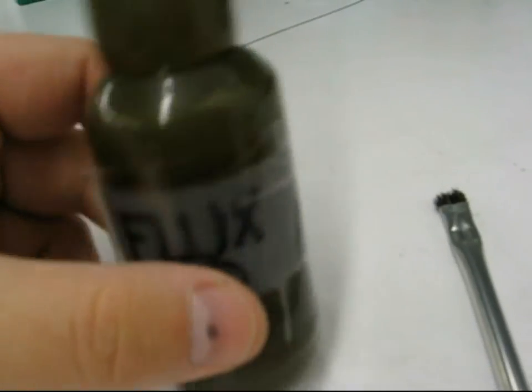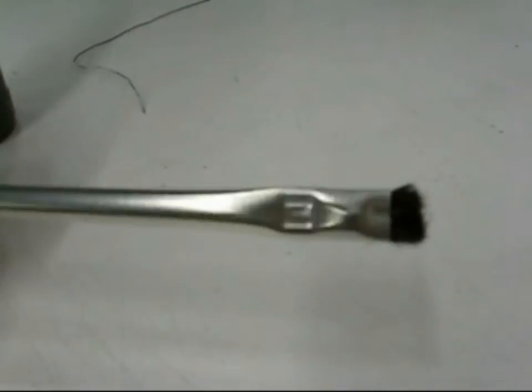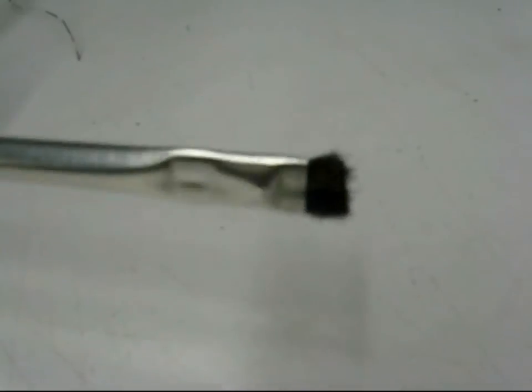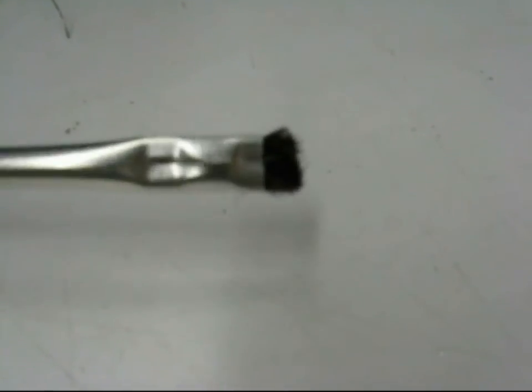I'll show you what we're going to be using today. This is RMA flux in a little applicator bottle. This is an acid brush, very good for cleaning flux after you're done soldering. Just use a little alcohol on the tip of it.